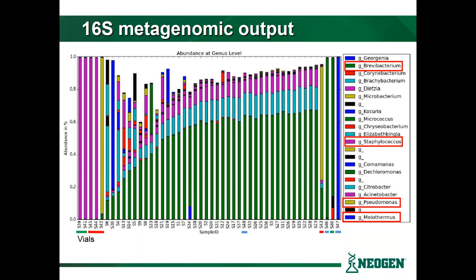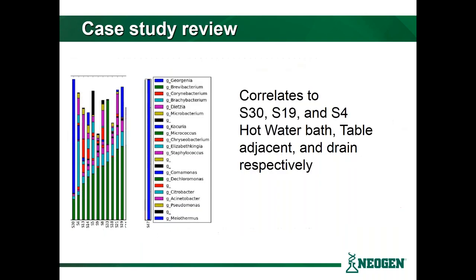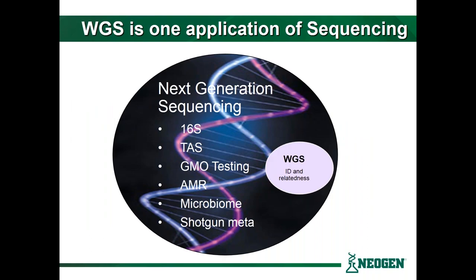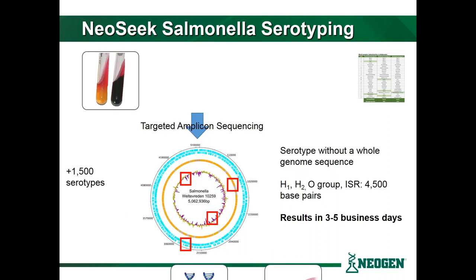For 16S metagenomics — if you're not familiar — we take in samples, do an extraction, perform PCR of one specific region of the gene, then do data analysis. The output is very different from a phylogenetic tree: on the x-axis are different samples, different colors correlate to different bacteria, and the size of the color within a bar represents relative abundance. We use this to answer things like: what organisms are present in a sample that are not supposed to be there, and where are they coming from? In our case study, we found a particular organism coming from a hot water bath and used the sequencing technology to vector in through different sampling protocols to find where it was specifically coming from.